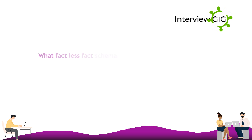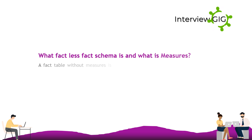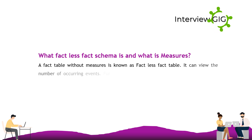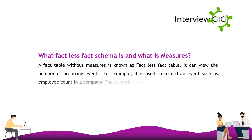A fact table without measures is known as a factless fact table. It can record the number of occurring events — for example, it is used to record an event such as employee count in a company. The numeric data based on columns in the fact table is known as measures.